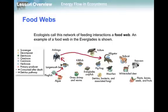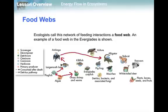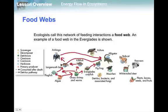The food web should have many, many branches because it's a web. The algae can be eaten by another herbivore — grasshemps and worms. Those could be eaten by a flagfish, or also by a killifish or crayfish. The crayfish could be eaten by a frog. The killifish could be eaten by the largemouth bass. The largemouth bass could be eaten by the alligator. A vulture might eat a killifish, might eat a largemouth bass, and might even eat an anhinga if it was dead.